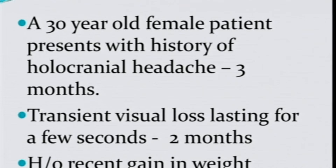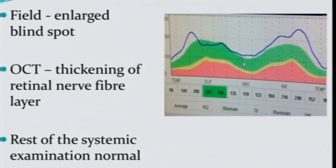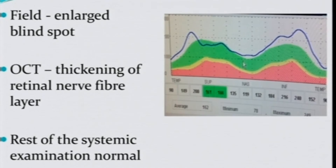This symptomatology tells us she must have some intracranial pathology — headache with visual problems always prompts us to think of intracranial pathology. On examination, visual acuity and motility were normal, pupils were normal, but the fundus showed marked papilledema. The field examination showed enlargement of the blind spot, and OCT showed thickening of the retinal nerve fiber layer, while the rest of the systemic and neurological examination was normal.